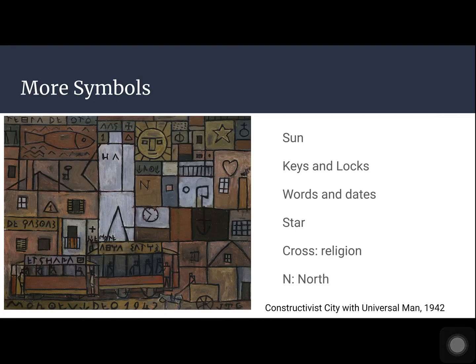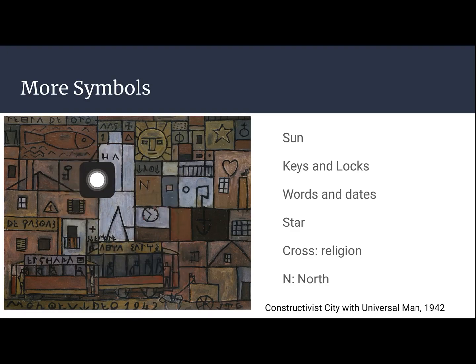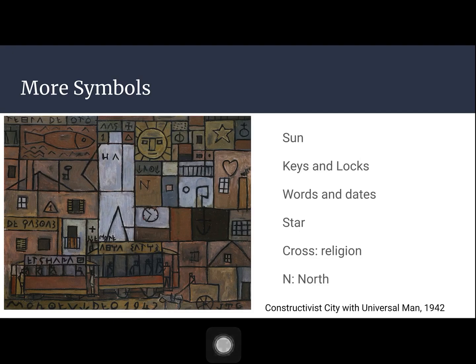Here's another painting and you see more symbols. There's a sun, a key, and sometimes a lock is also in the painting. Words and dates, a star, a cross that stands for religion, and N stands for north.